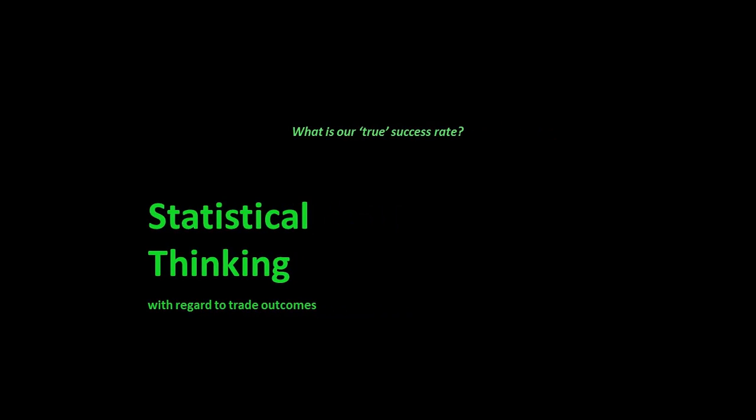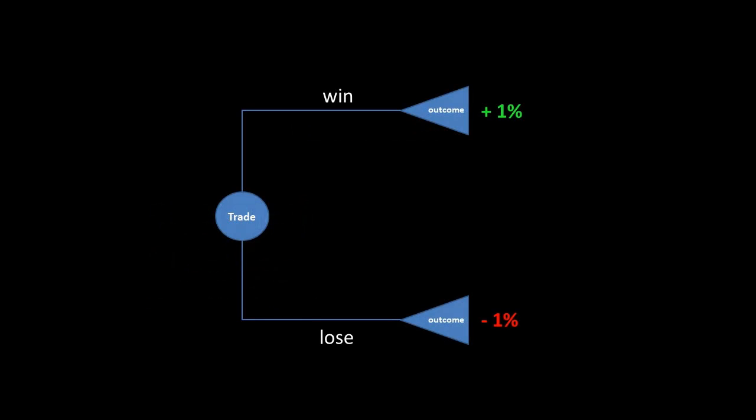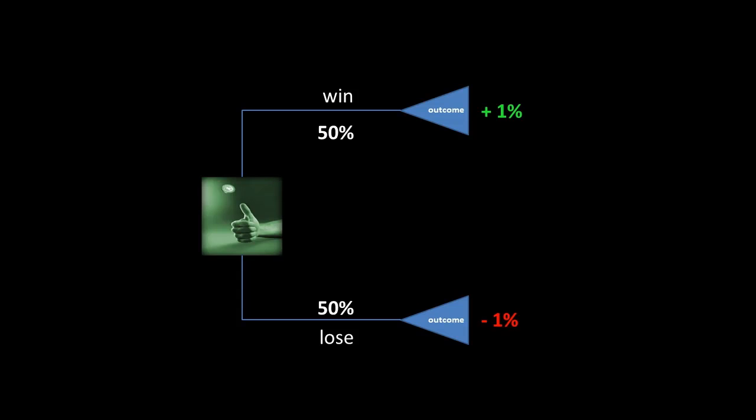Hello, David Burnham here. This video is going to be about statistical thinking in relation to our trade outcomes. Let me define a simple scenario for trade outcomes — I only want to think about winners and losers, where the winner is a 1% win and a loss is a 1% loss. That's just to keep the numbers simple. I want to compare a breakeven strategy with a 50% success rate versus a strategy that gives me an edge — maybe a 60% edge in this case.